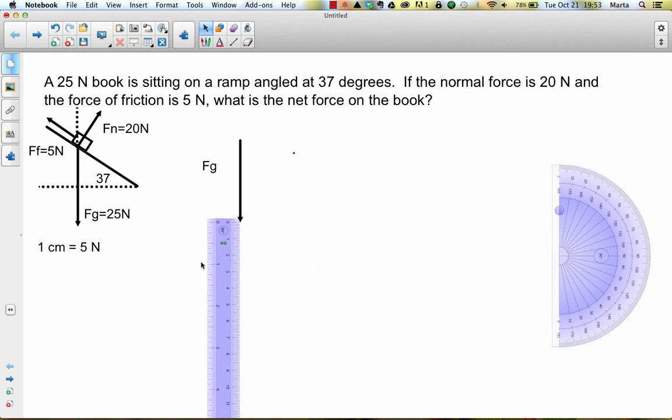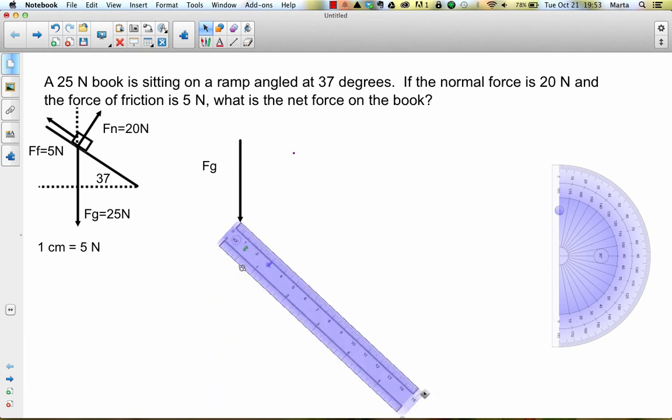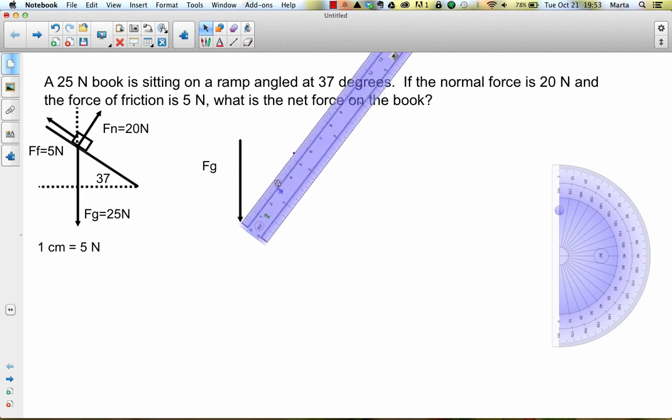Then I'm going to take my ruler, I'm going to put zero at the tail of gravity, and then line it up along that mark.